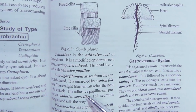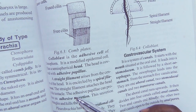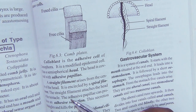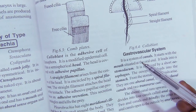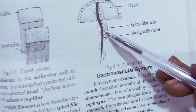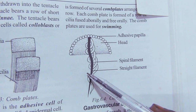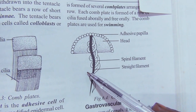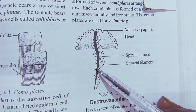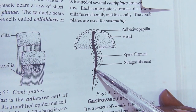Ctenophora does not have any nematocyst. In the previous phylum — cnidarians — we saw the presence of nematocyst. But here there is a lack of nematocyst. Instead, it possesses special cells called lasso cells or colloblasts. These lasso cells help in the capturing of food.